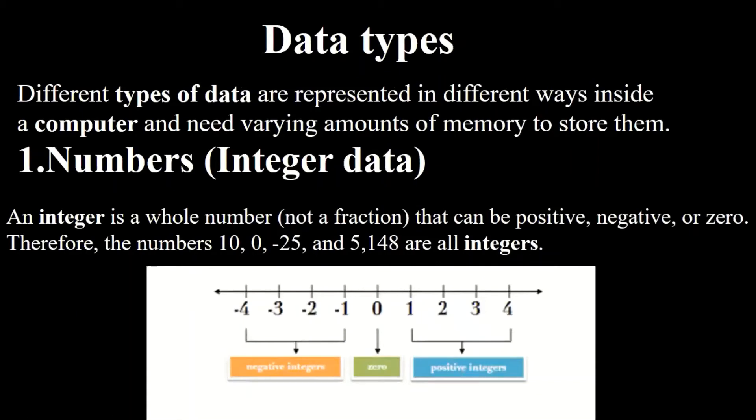There are different types of data. Different types of data are represented in different ways inside a computer and need varying amounts of memory to store them. It means that data stores different amounts of memory according to their size. So we have different kinds of data. Number one: numbers. And numbers are available in different forms, for example integer data.